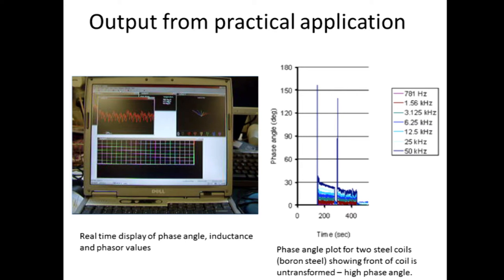Coming back to the idea of different magnetic and sensor signals, there's analytical work done by our collaborators at Manchester showing that if we take a particular aspect — the phase angle — you can make it relatively insensitive to lift-off and target geometry. Provided you've got some hot steel there, your signal won't change because of different amounts of steel present — you're just looking at the transformation characteristics. This is where the fundamental work and modelling fits alongside.